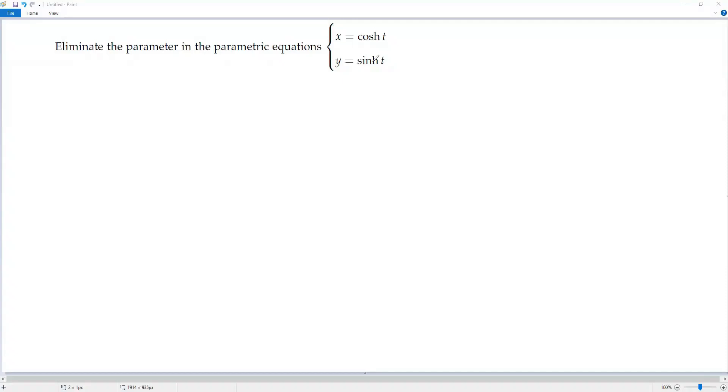Okay, so here we have x equals cosine hyperbolic t and y equals sine hyperbolic t. Both x and y are defined in terms of hyperbolic functions.